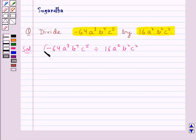c². So we have to divide these two monomials. This could also be written as (-64a³b⁴c⁵)/(16a²b²c²). Now when we have to divide a monomial by another monomial,